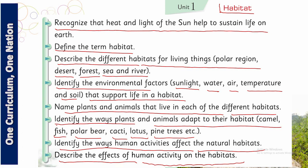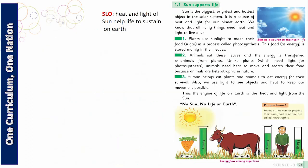My dear students, this chapter is long but very interesting, and I am confident you will enjoy learning it. So let's start from the beginning of the chapter. The first SLO is that heat and light of the sun help to sustain life on Earth.